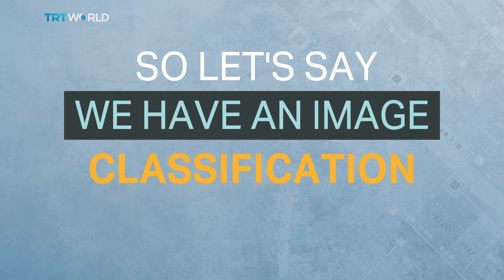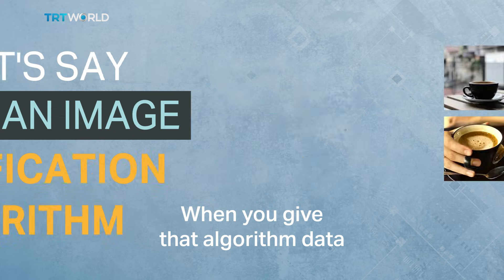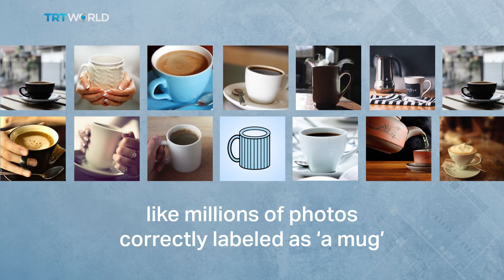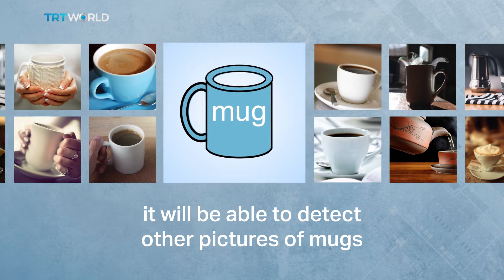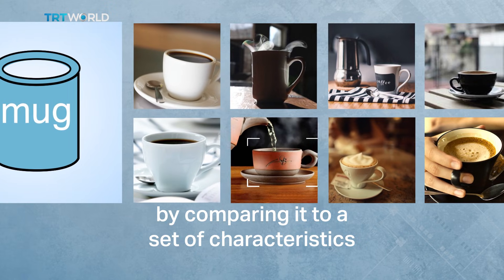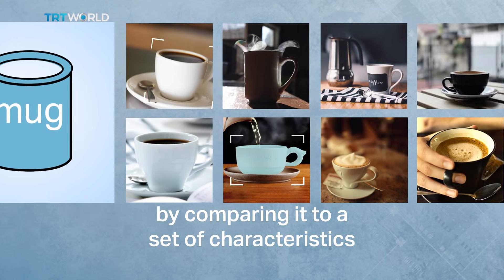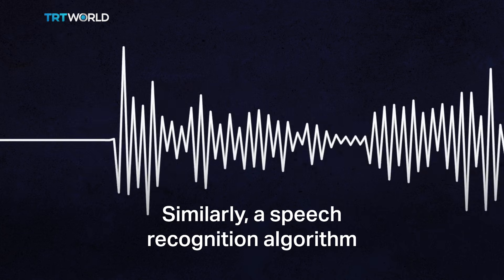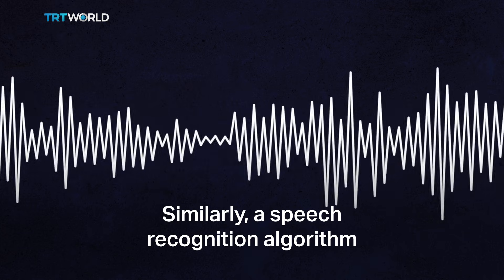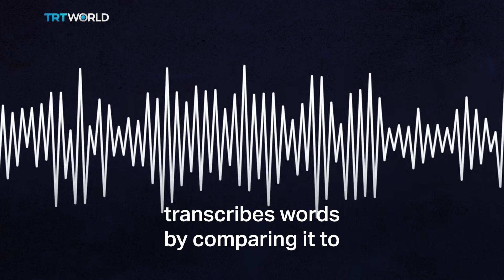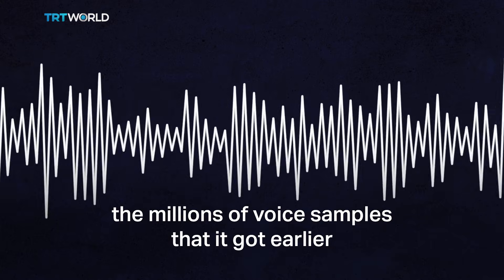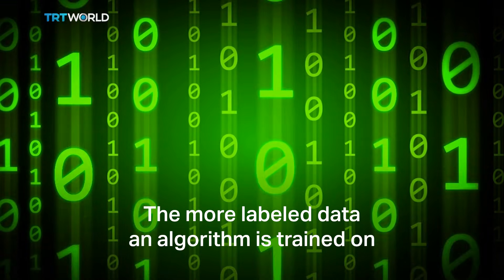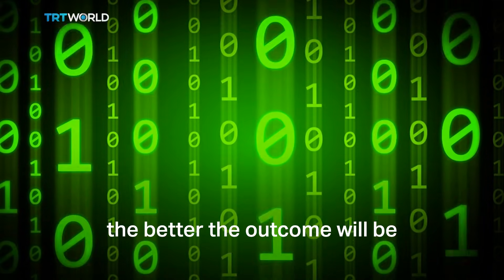So let's say we have an image classification algorithm. When you feed that algorithm data like millions of photos correctly labeled as a mug, it will be able to detect other pictures of mugs by comparing them to a set of characteristics it has learned thanks to its database. Similarly, a speech recognition algorithm transcribes words by comparing them to the millions of voice samples it was trained on. The more labeled data an algorithm is trained on, the better the outcome will be.